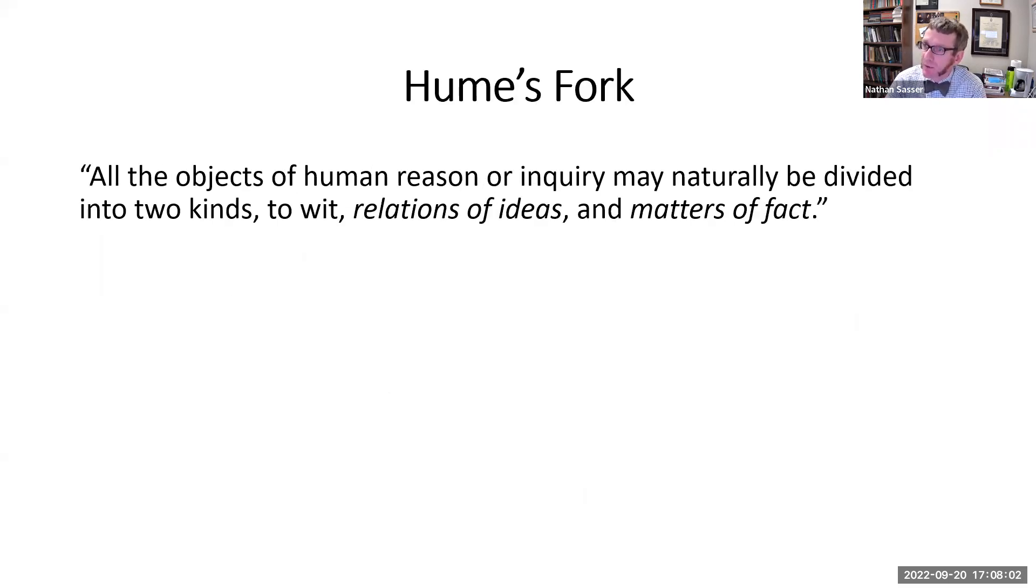We begin with a distinction that's become known as Hume's fork. Hume says all the objects of human reason or inquiry may naturally be divided into two kinds, to wit: relations of ideas and matters of fact. He wants to say all the things that we can reason about fall into one of these two categories. Let me explain what each of these terms mean for Hume.